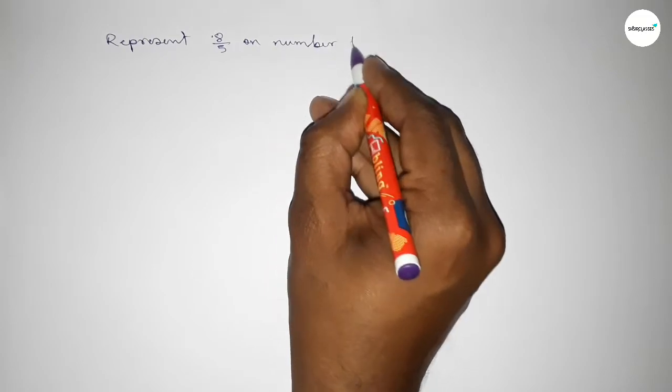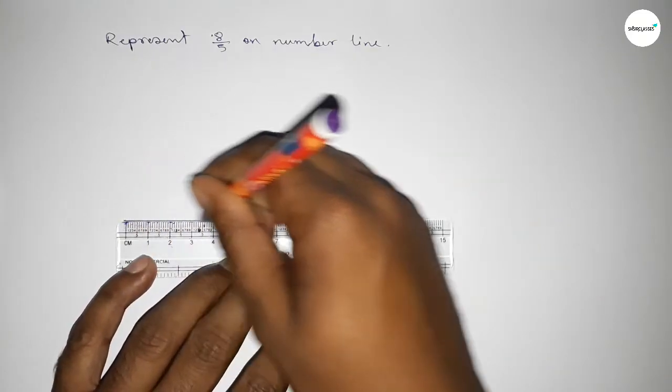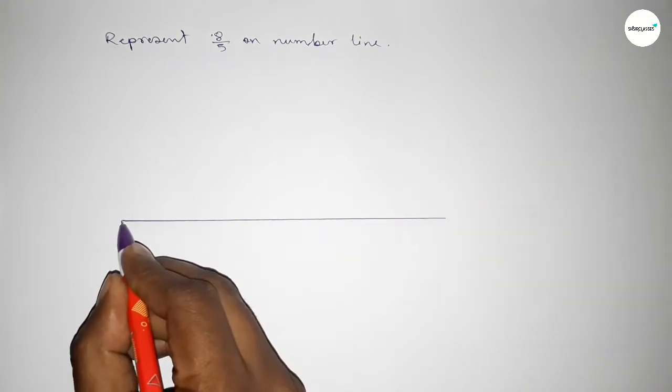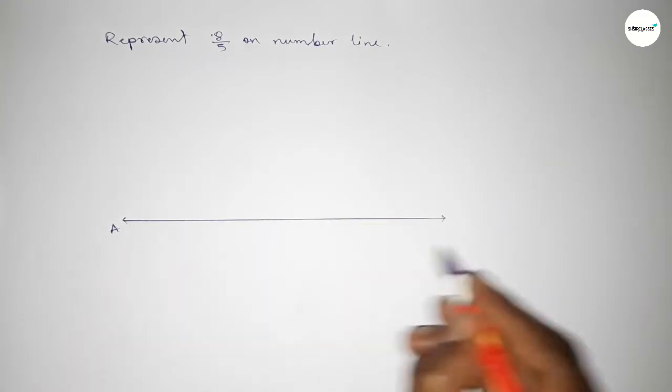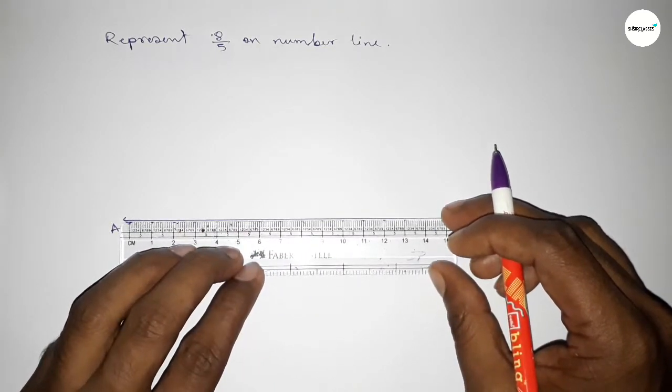So let's start the video. First of all, we have to draw the number line. Drawing a line of any length and taking arrow marks on both sides. This is the AB line.